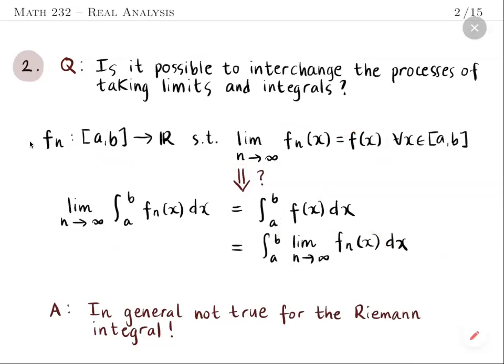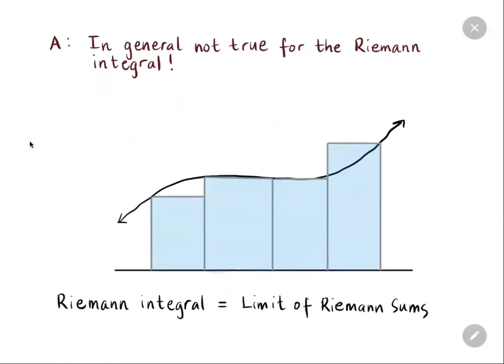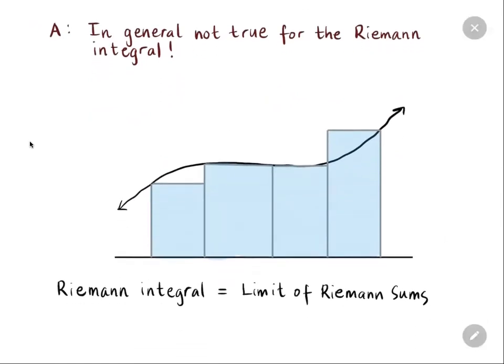Therefore, with the Riemann integral we are not generally allowed to interchange the limit and the integral. To explain this roughly: recall that the Riemann integral is basically the limit of Riemann sums, which geometrically you can think of as the sum of areas of rectangles.